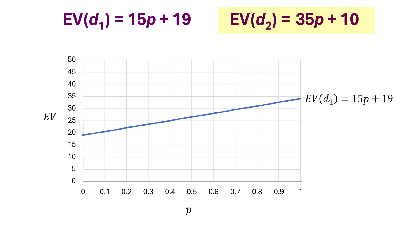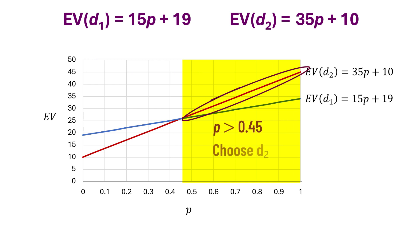Similarly for D2, when P equals 0, the expected value is 10. And when P equals 1, the expected value is 45. And that's the line in red. We see here that as long as P is less than 0.45, the expected value of D1 is higher than that of D2. So D1 would be the preferred alternative in that interval, assuming payoffs are profits. And when P is greater than 0.45, the expected value of D2 is higher than that of D1, and the preferred alternative there is D2.